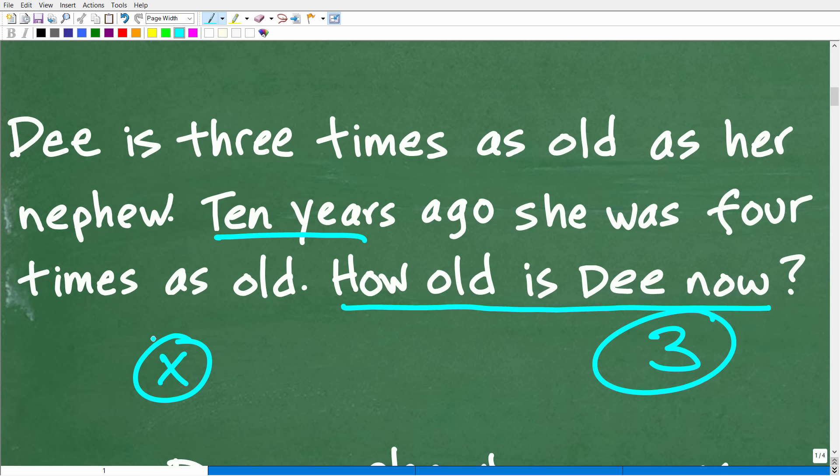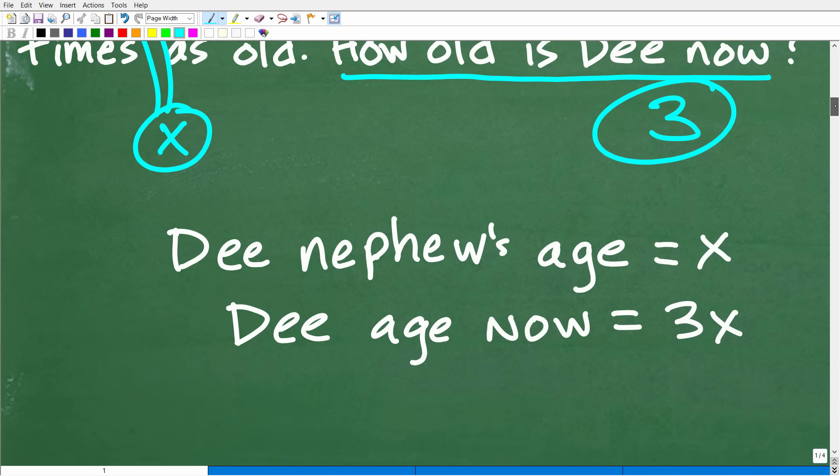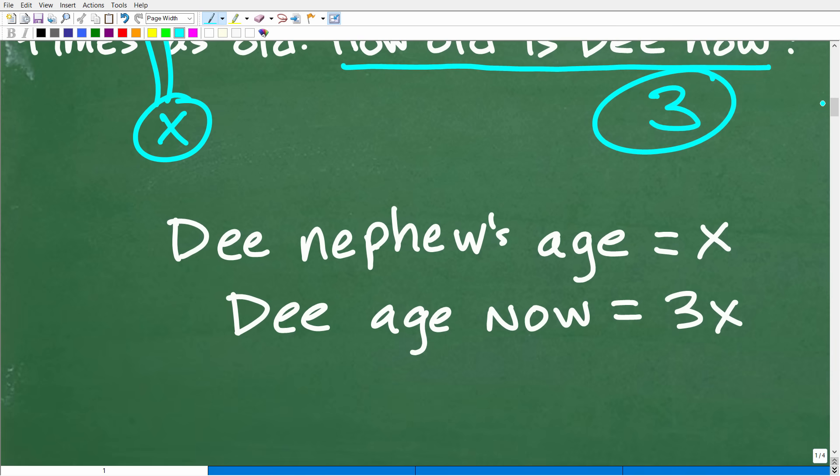Now, in algebra, there's different types of problems that come up all the time. An age type word problem like this is pretty common. So you can use tables, but you can also just use a simple variable. So we're going to let the variable X represent someone's age. Now, whose age should we let X equal to? Should we let it equal to Dee's age or maybe her nephew's age? And should we let this variable X represent the age ten years ago or the current age? Well, you kind of have to think about this, but if you really put some thought into it, it's easier to let X equal the nephew's age. Okay, and I'll show you why right now.